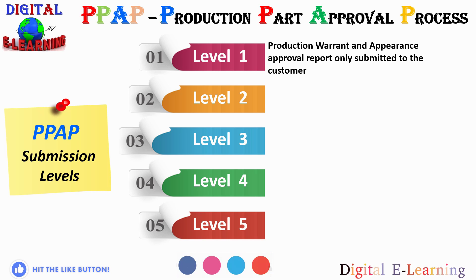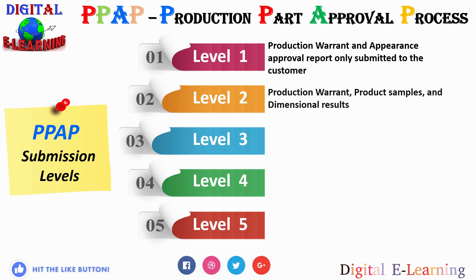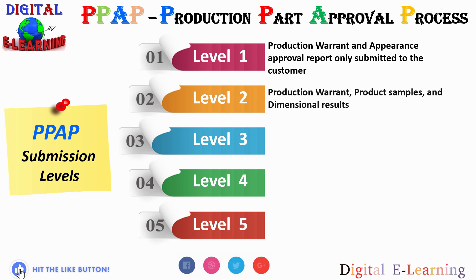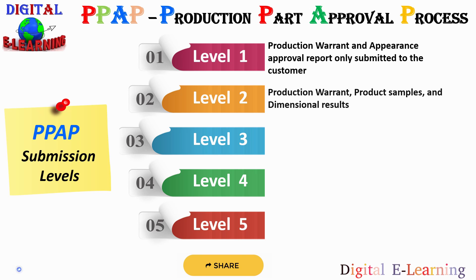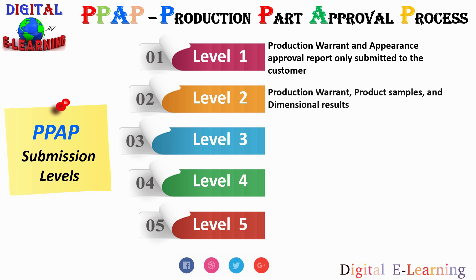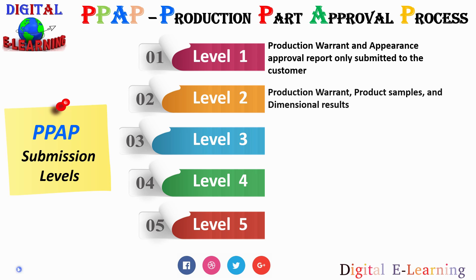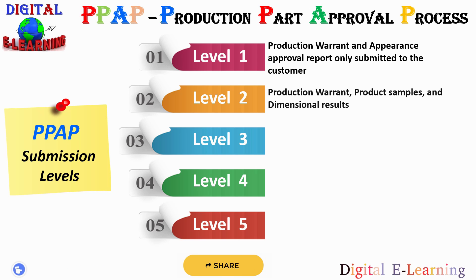Level two has production warrant, product sample, and dimensional results. In addition to the part submission warrant, you also need to submit samples as well as dimensional results. This level is generally used for minor revisions, changes to parts that have existing approved PPAPs, or minor changes in the method of production of parts with existing approved PPAPs, where limited data would be determined by your customer.